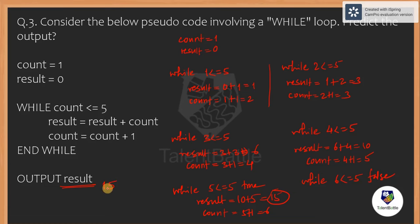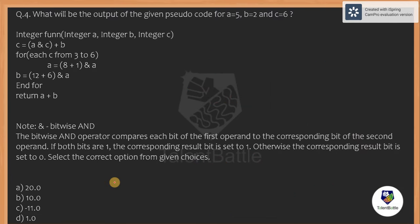If you identify the pattern after 1 or 2 iterations, you can quickly finalize your result and save time. In the examination, make sure you complete the task within 60 seconds. You can use that pattern-identification approach. So the answer here is 15.